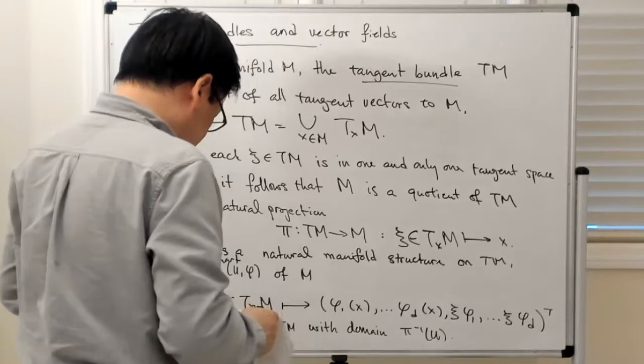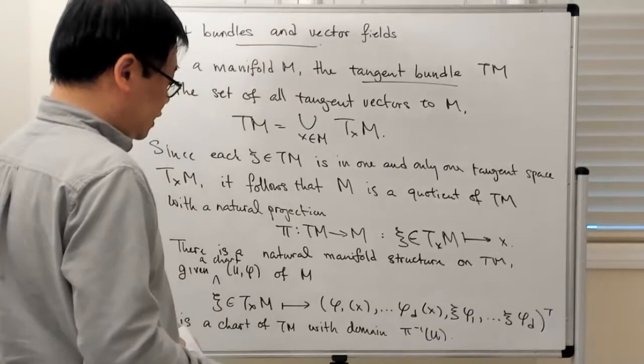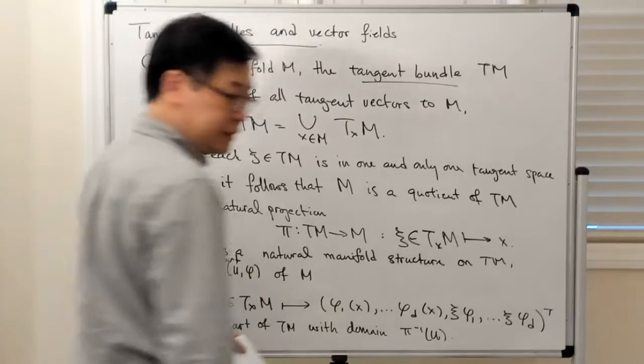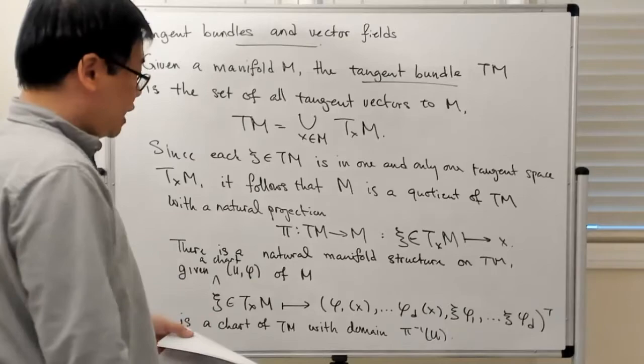It's easy to convince yourself from that that the tangent bundle has twice the dimension of the base manifold. You can also see that the individual tangent spaces have the dimension of the base manifold.